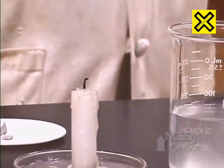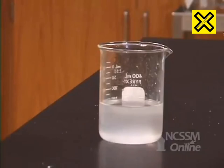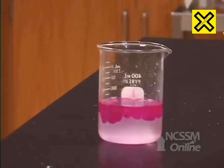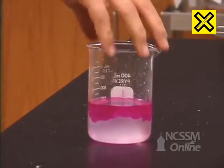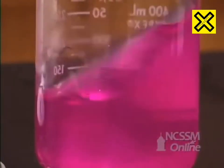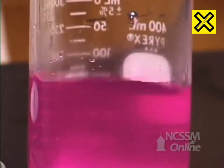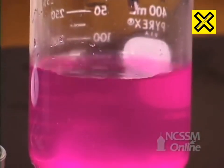We can test for the fact that we produced sodium hydroxide by adding phenolphthalein. The phenolphthalein turns a purple-red color due to the presence of the hydroxide ions indicating the formation of the sodium hydroxide.